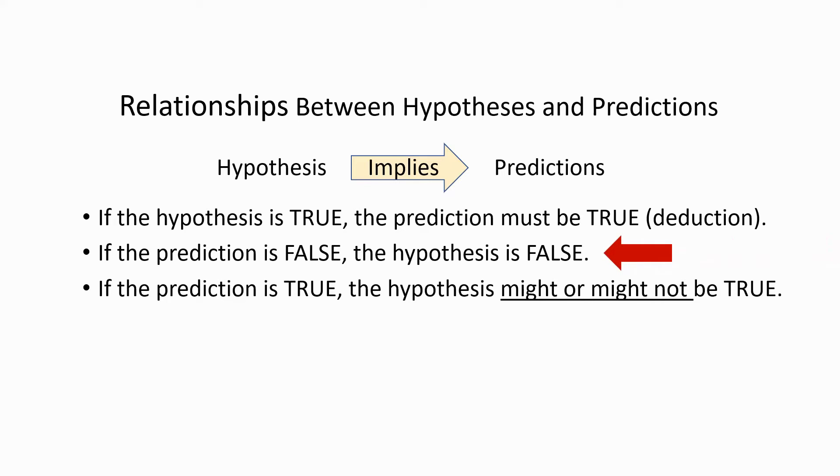So for our purposes here, for experimental science, the most important relationship is this one, where the hypothesis is false if the prediction it makes is false. And in general, these two ideas form the basis of the scientific reasoning that we're going to talk about.